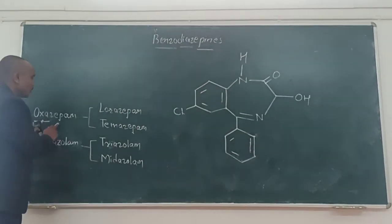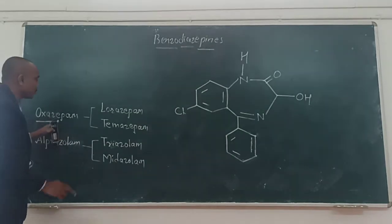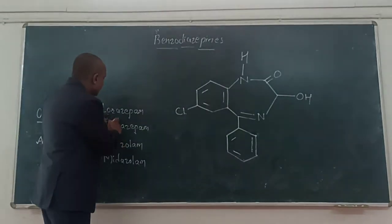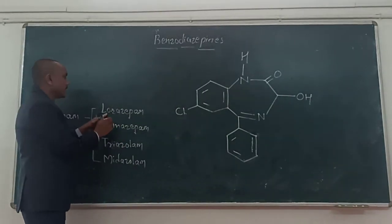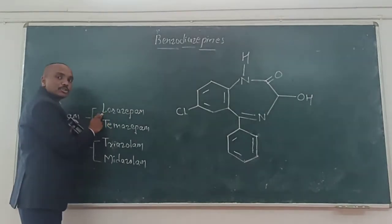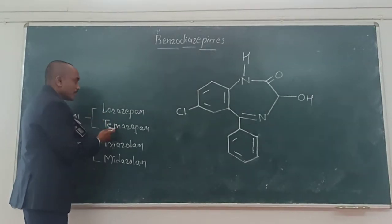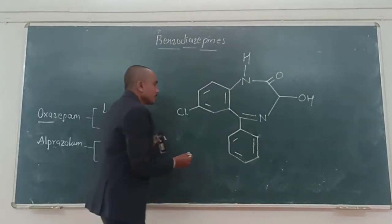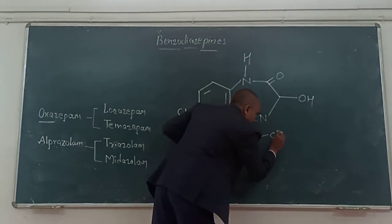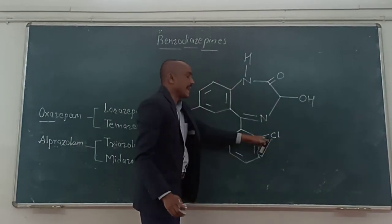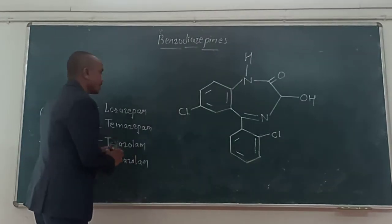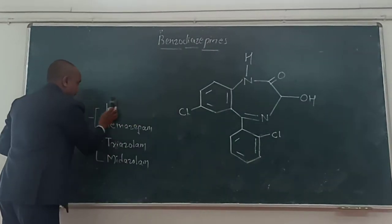Once we have oxazepam, we can convert it into lorazepam. The name indicates the presence of chlorine. So you have to add a chlorine atom at the second position of the phenyl ring. And it becomes the structure for lorazepam.